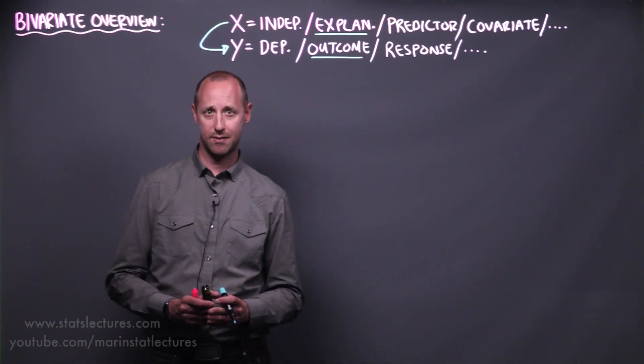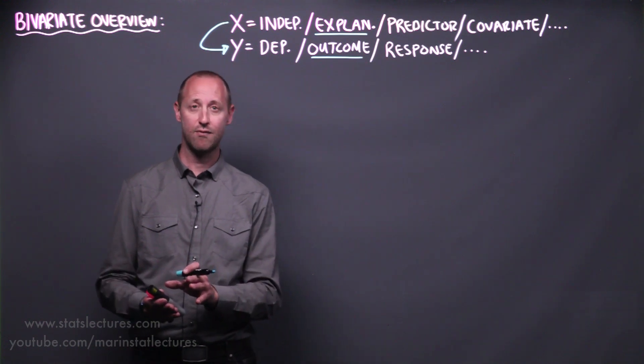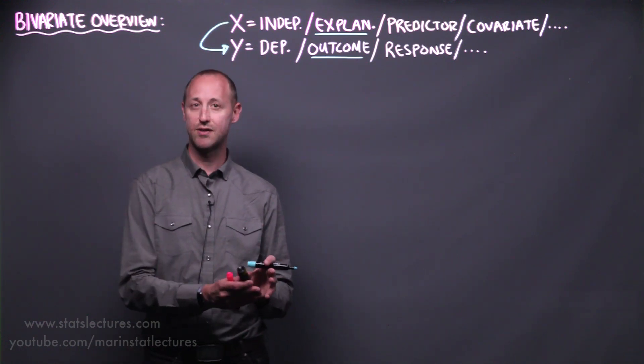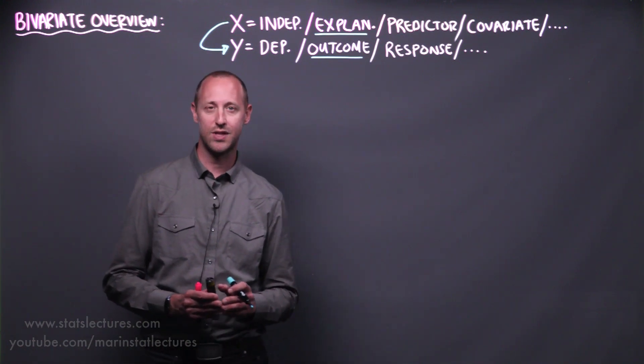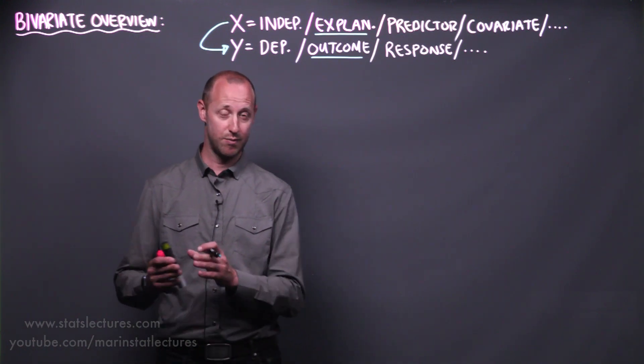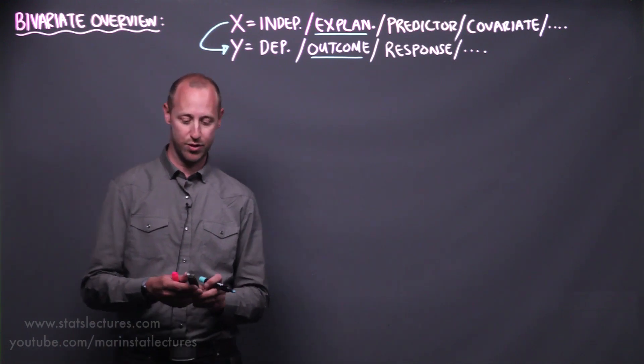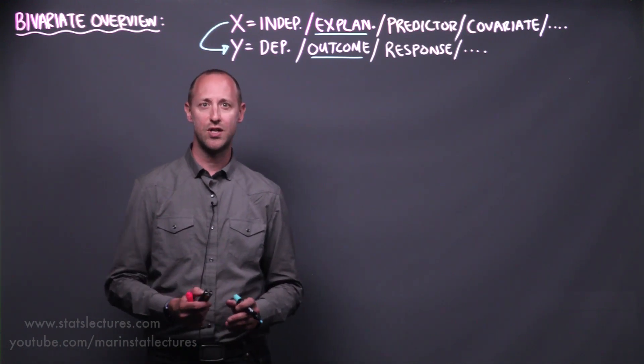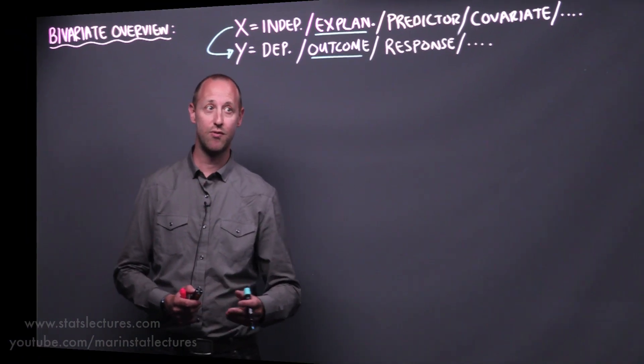Similar to hypothesis testing, we looked at how far is what we observed in the sample of data from what we would have expected to have seen if some null hypothesis is true, and then we calculate a p-value which tells us what's the probability of observing what we did in our sample or something more extreme if the null really were true. So these will be our foundation for all the different bivariate methods of analysis we're going to talk about in following videos.